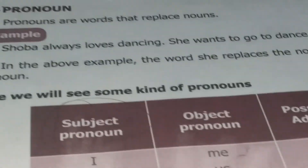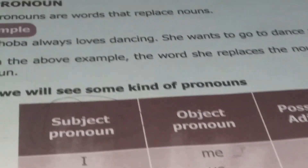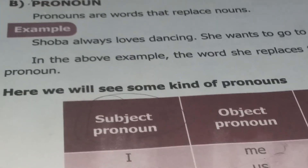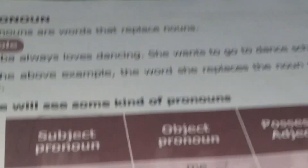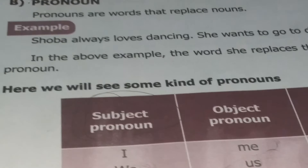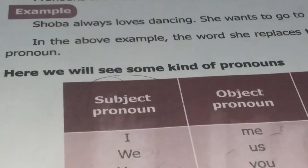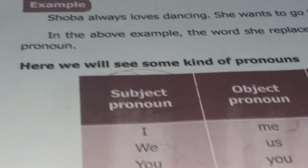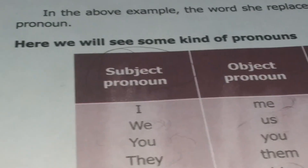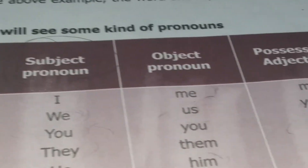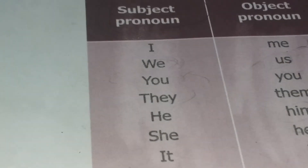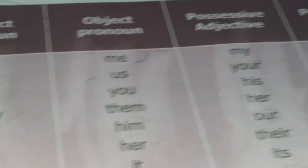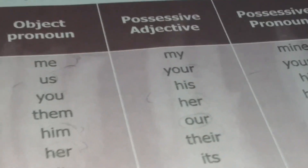In the above example, instead of Shoba they used 'she', so 'she' is a pronoun. Here we will see some kinds of pronouns. They are: subject pronoun, object pronoun, possessive adjective, and possessive pronoun.